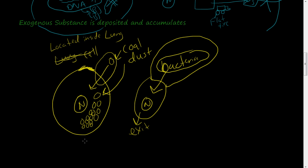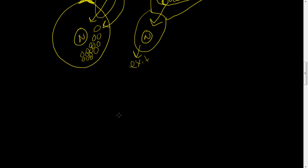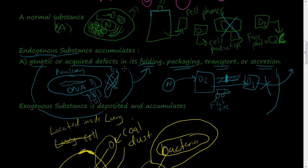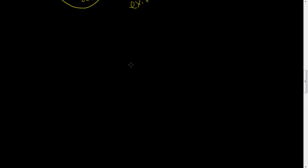To review: first, a normal substance is being produced but the metabolic processes to consume it are deficient, so the cell starts accumulating a normal biological substance. Second, an endogenous substance accumulates because of some genetic or acquired defect in its folding, packaging, transport, or secretion mechanisms. Third, an exogenous substance is deposited and accumulated within the cell. Instead of covering examples in this video, we'll make another video on the examples of intracellular accumulations.